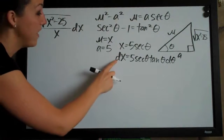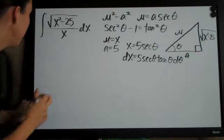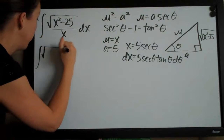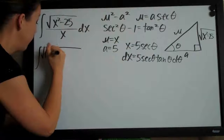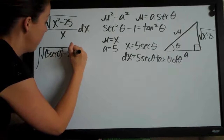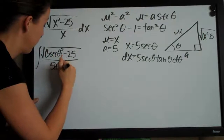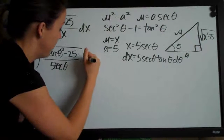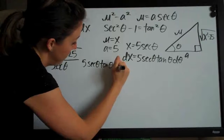Now that we have x and dx, we can plug those two things back into our integral. We'll get the integral of the square root of 5 secant theta squared minus 25 over 5 secant theta, and then dx becomes 5 secant theta tangent theta d theta.